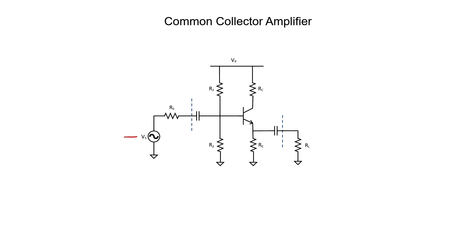We're starting with an AC signal, and the goal is to amplify that signal. The common collector amplifier is a non-inverting amplifier — when the signal reaches the load, it's not going to be inverted. Let's trace the signal's path as it moves through the amplifier. It first crosses the source impedance, and any time you have a source impedance, you can expect the voltage to drop.